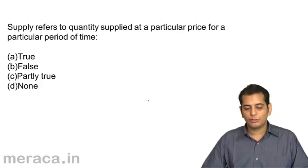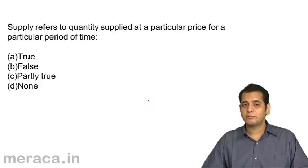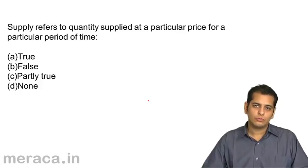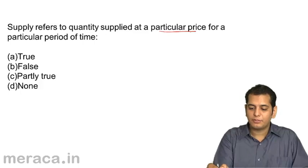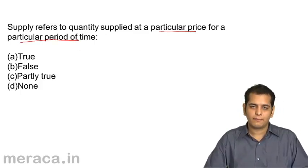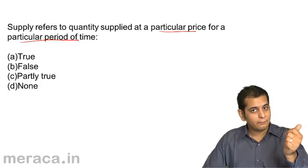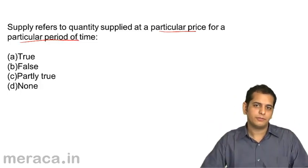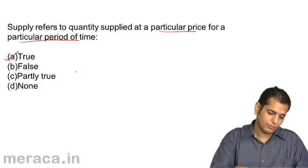Next: supply refers to quantity supplied at a price for a particular period of time — A: true, B: false, C: partly true, D: none. The answer is true. Supply means quantity supplied at a particular price for a particular period of time. Unless you express the quantity supplied at a particular price during a given period of time, the statement of supply would not be complete. So this statement is true.